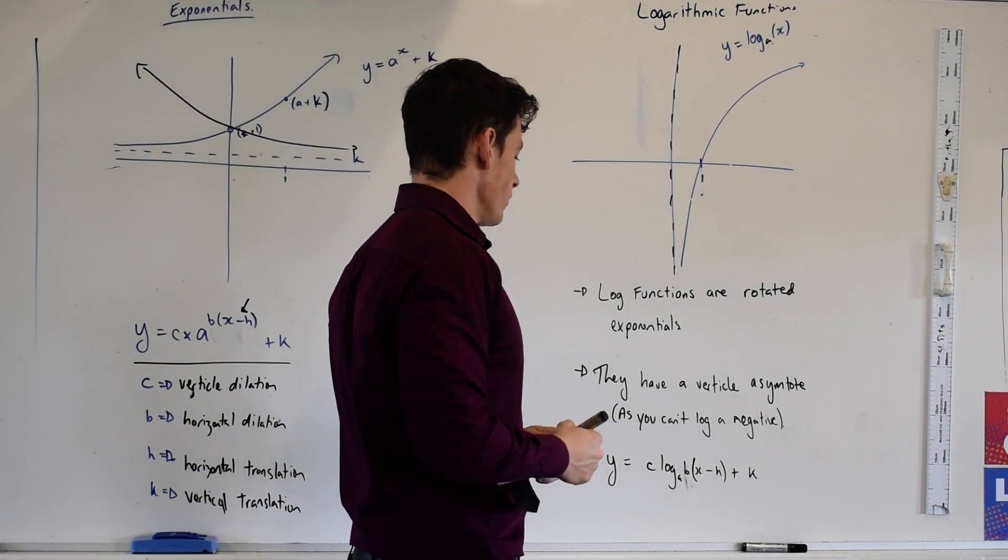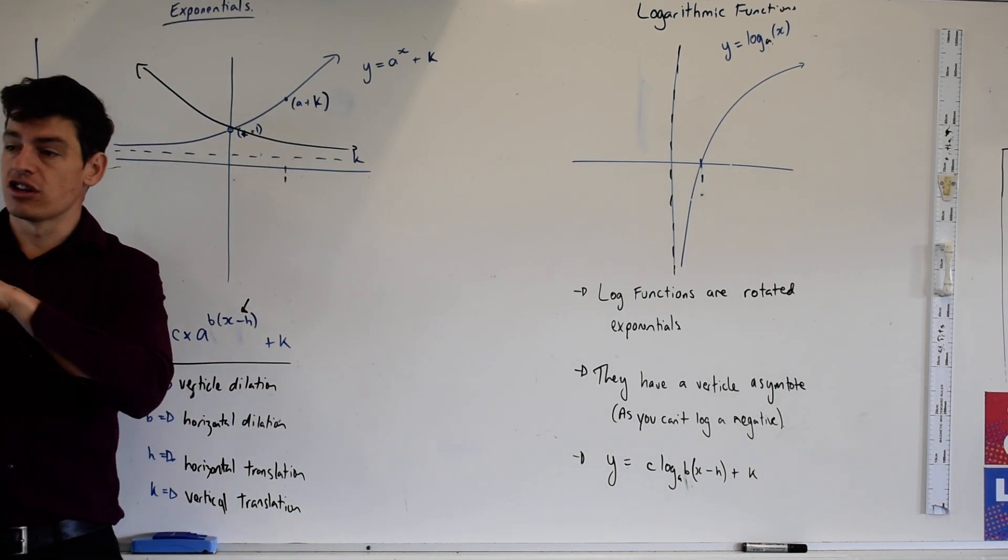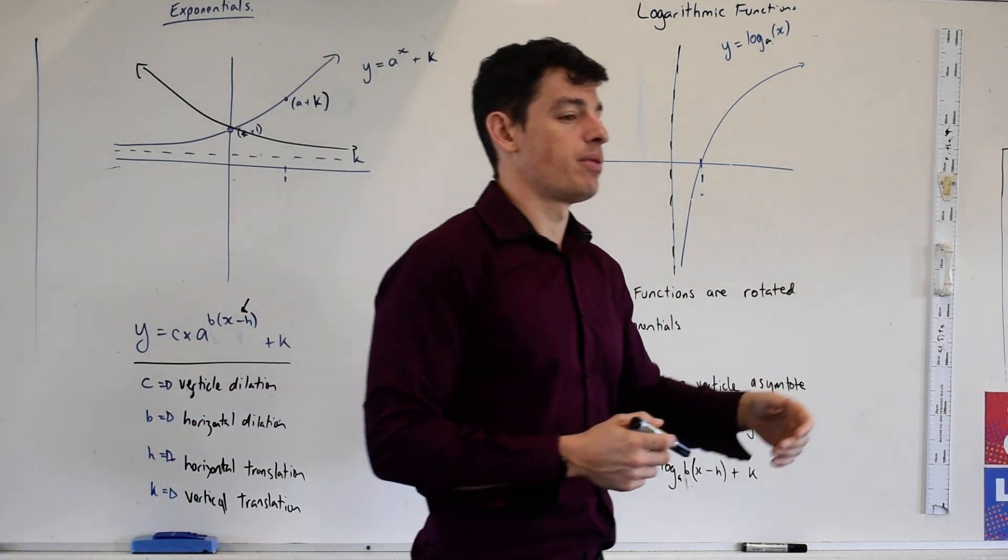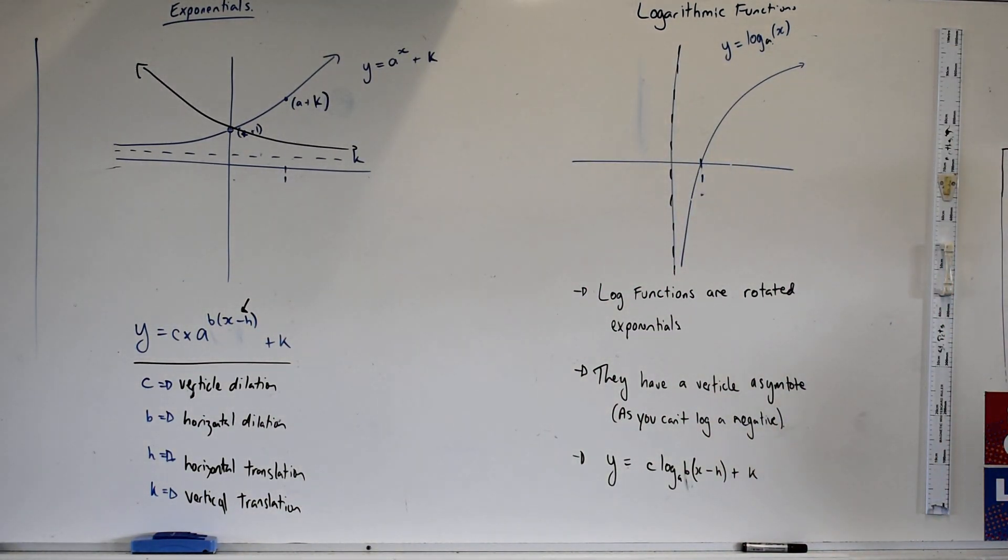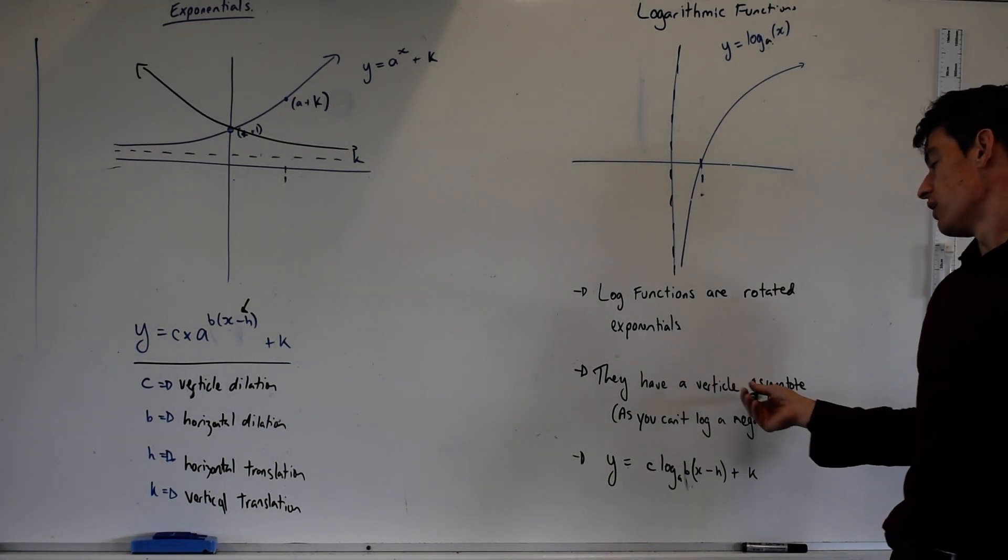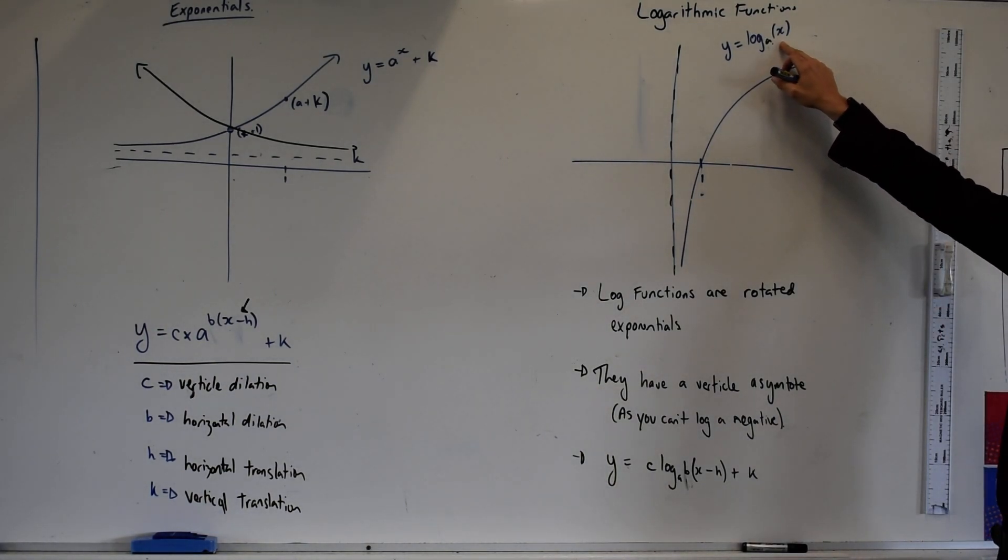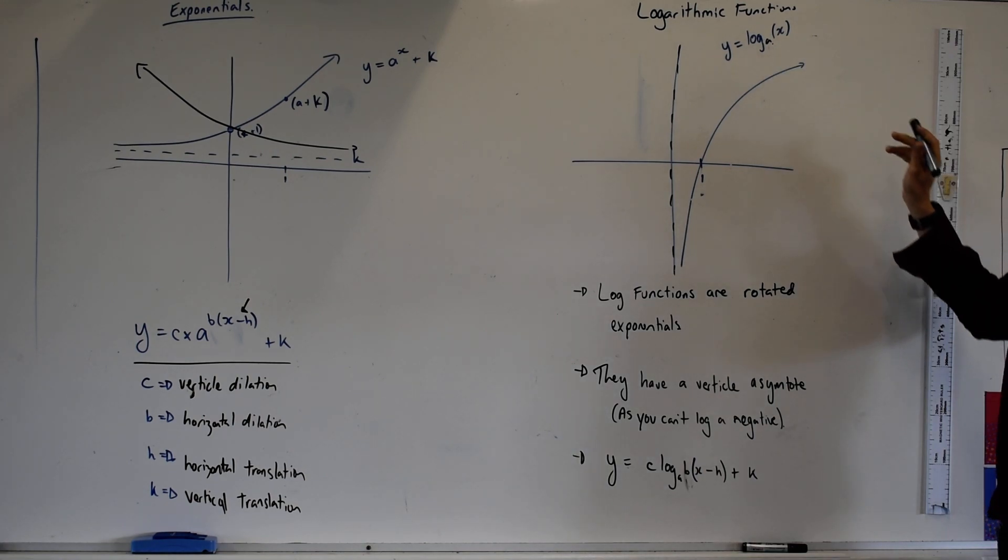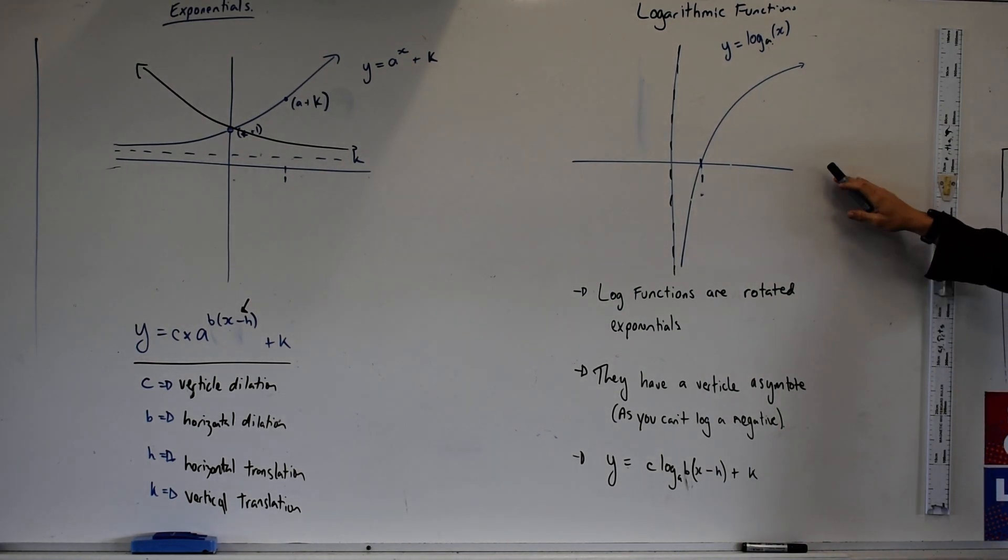So it's a rotated exponential, they have a vertical asymptote. So we know that the exponential function has a horizontal asymptote, because if you put a positive thing to the power of a number, it never reaches or goes below zero. So conversely, because we can't get a negative value in our log, we have a vertical asymptote. So if I've got this function here, I know that x can never be zero or negative, so it never crosses that plane.